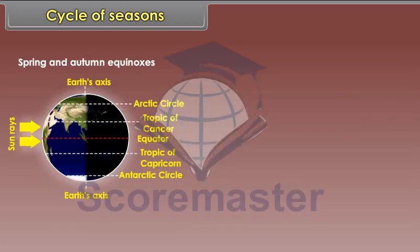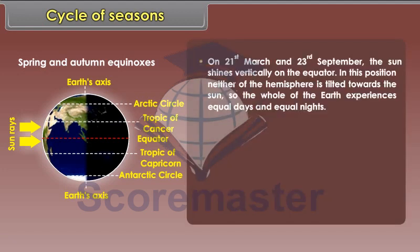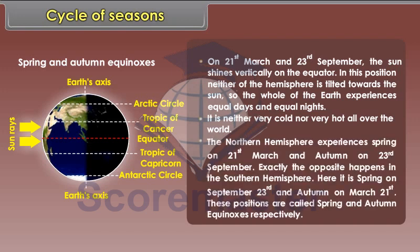Spring and Autumn Equinoxes. On 21st March and 23rd September, the sun shines vertically on the equator. In this position, neither of the hemispheres is tilted towards the sun, so the whole of the earth experiences equal days and equal nights. It is neither very cold nor very hot all over the world. The Northern Hemisphere experiences Spring on 21st March and Autumn on 23rd September.